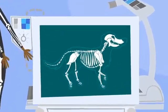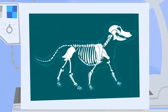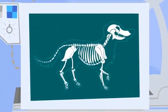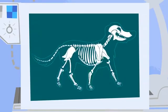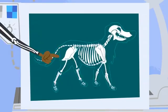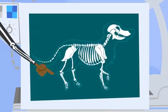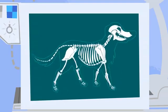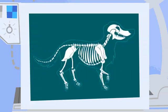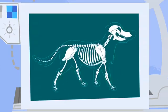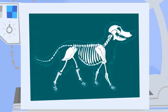This is Jester's skeleton. See those places where the bones meet each other? Those are called joints. These joints right here allow his legs to bend back and forth when he walks. Right now it looks like Jester's skeleton is moving on its own.